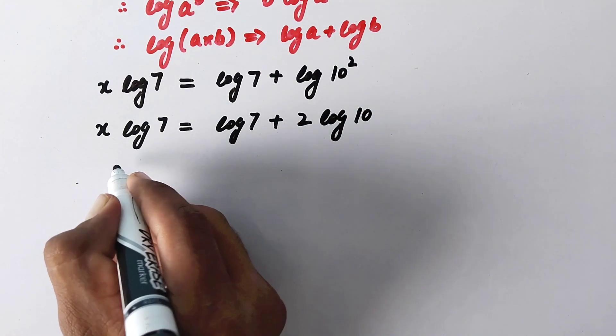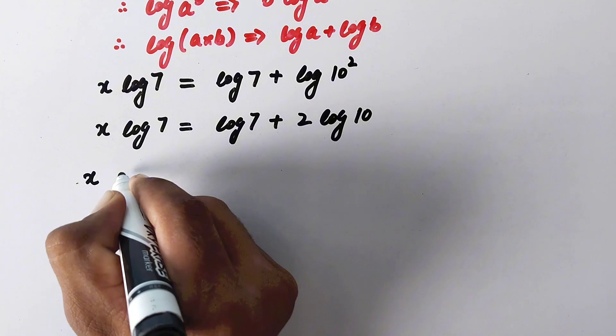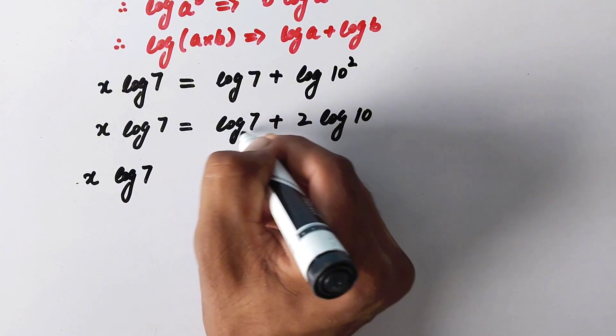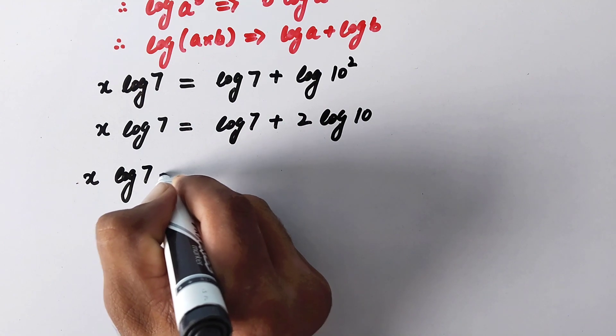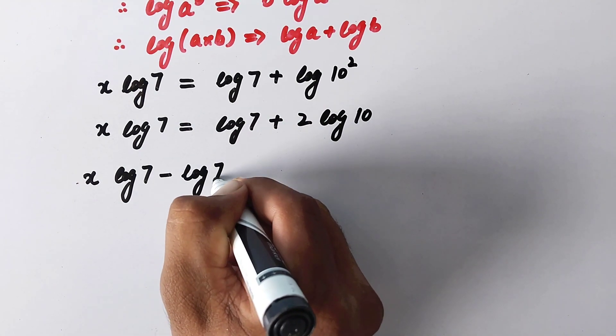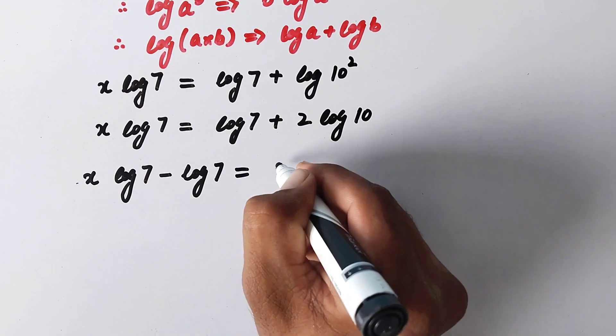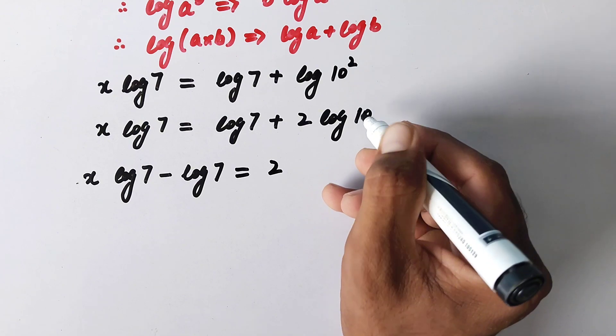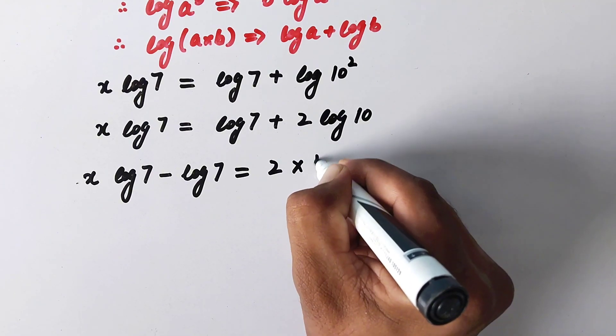Or now we will write x log 7—we will take this value on the left side so it will be minus log 7—equal to 2 times log 10 is equal to 1.